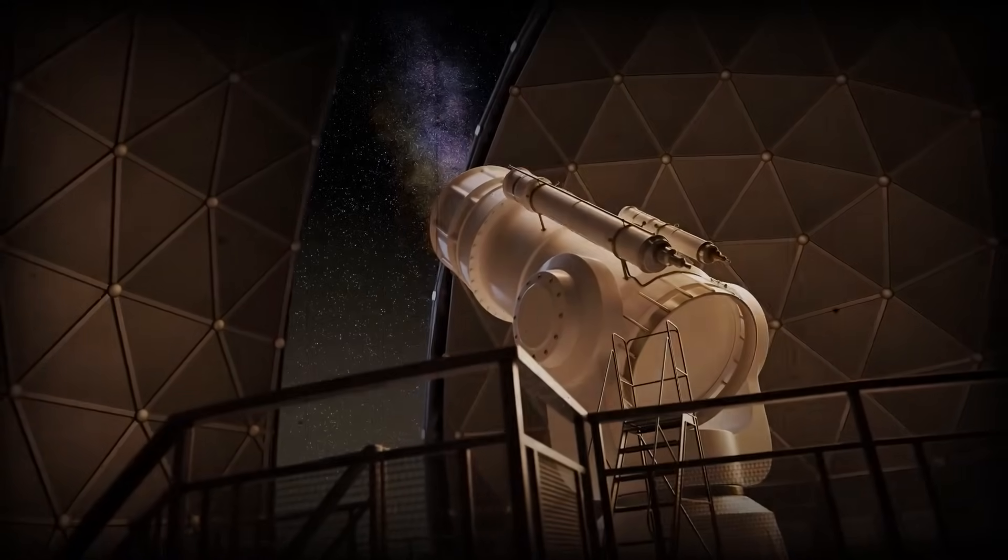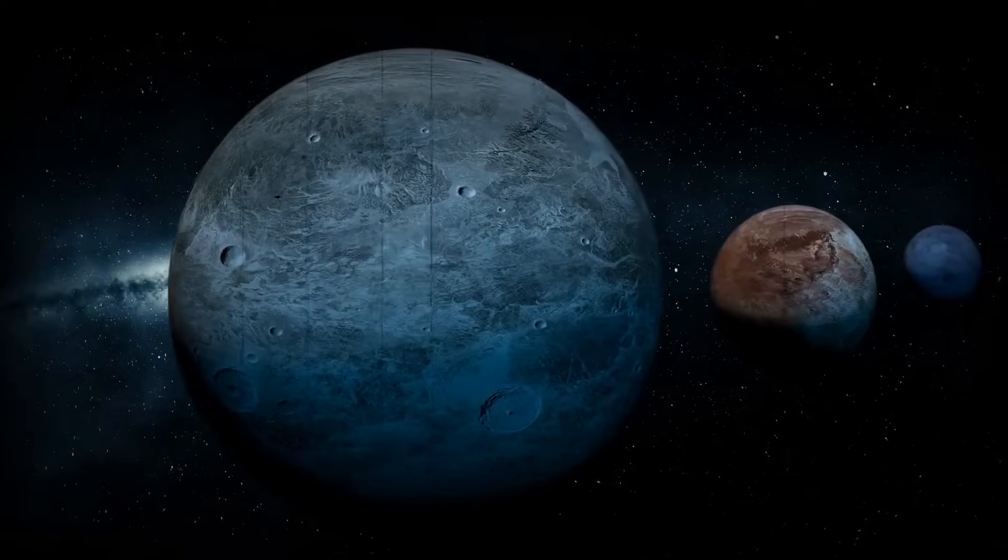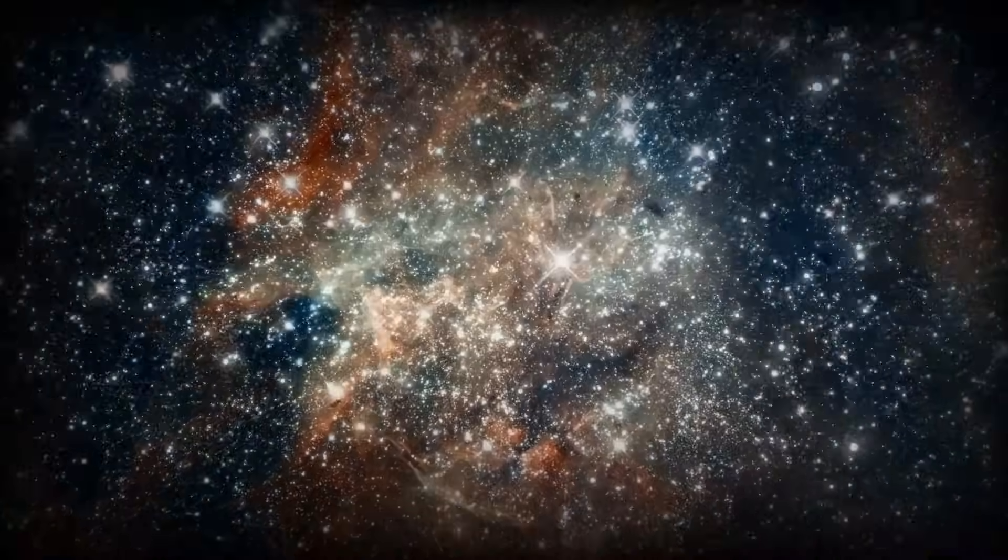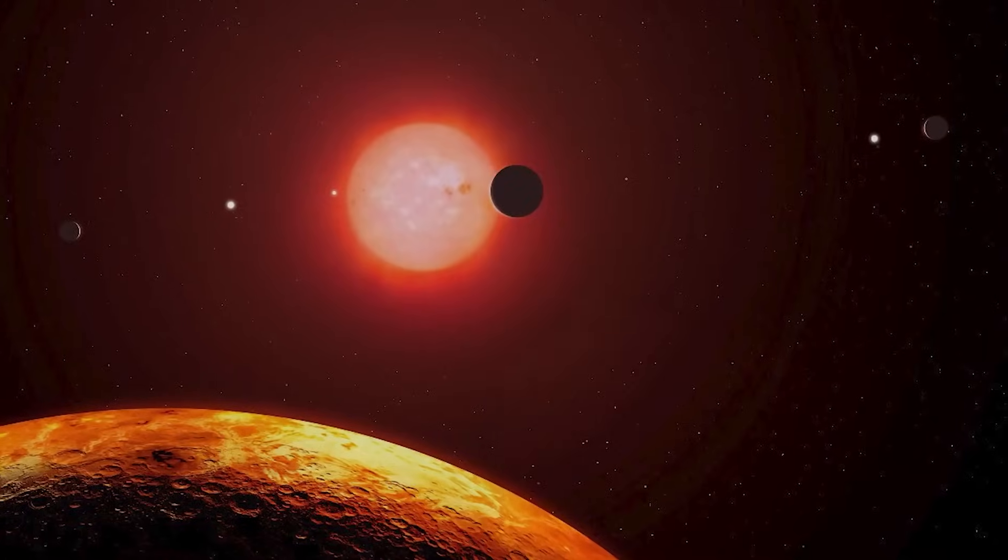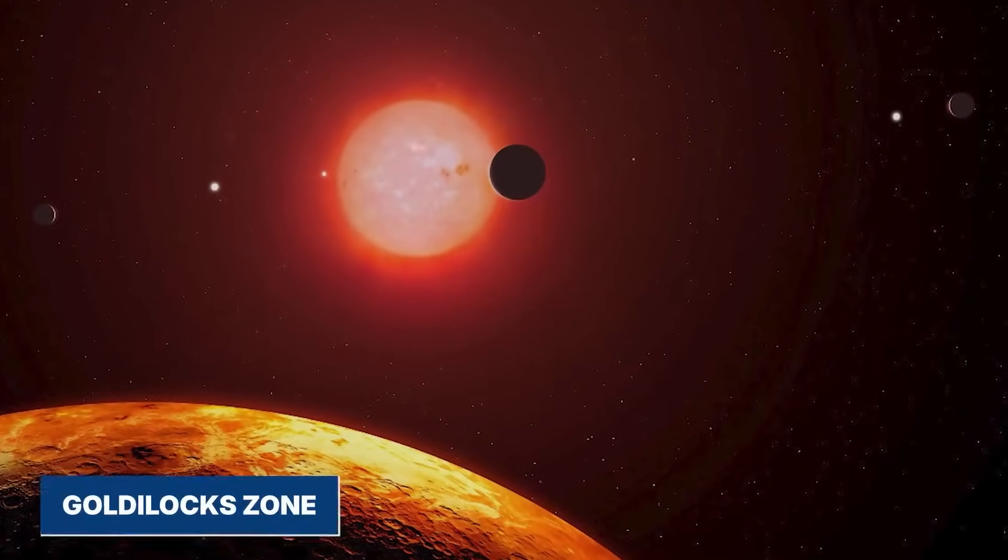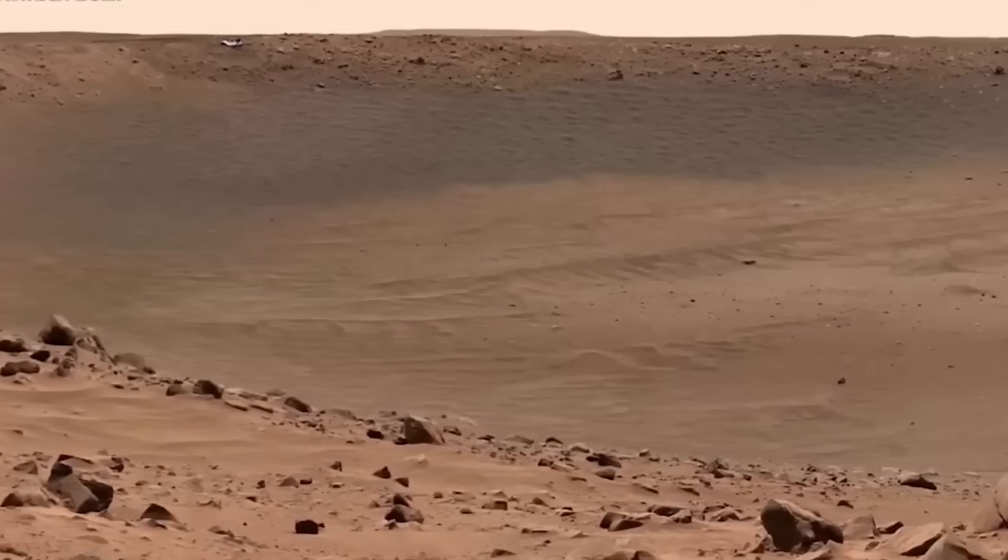Using the most advanced space telescopes and data from recent missions, scientists have confirmed the presence of several Earth-like planets, not in some far-off galaxy, but in our cosmic neighborhood. These worlds aren't just rocky and similar in size to Earth. Some sit perfectly in the Goldilocks zone—not too hot, not too cold, just right for liquid water to exist.